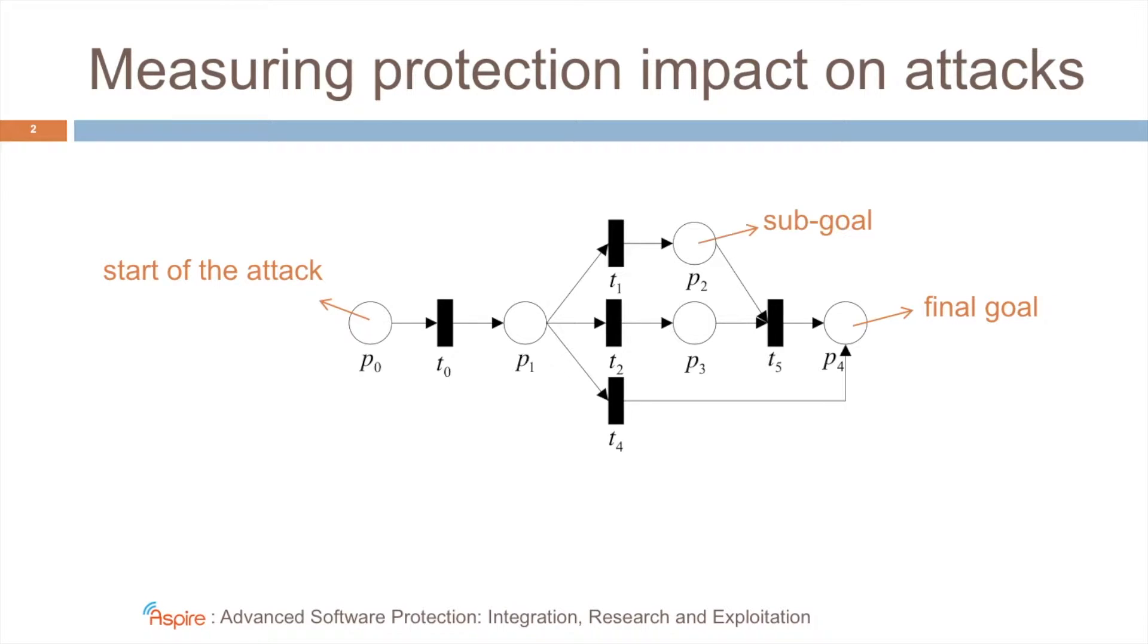And so these nodes in the middle model sub-goals. The black squares, they are transitions in the terminology of Petri Nets, and in our case they model attack steps. For example, this path here models that if an attacker has reached this goal, he has collected the trace or he has identified the code under attack, and he executes this attack step, then he has reached some final goal.